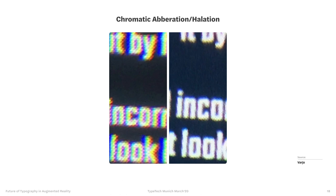Chromatic aberration is another issue. You see multiple color fringes behind text, making contours less visible and causing confusion between different letters. At smaller sizes, these color fringing effects fill up counters and apertures, making it harder to recognize different characters.